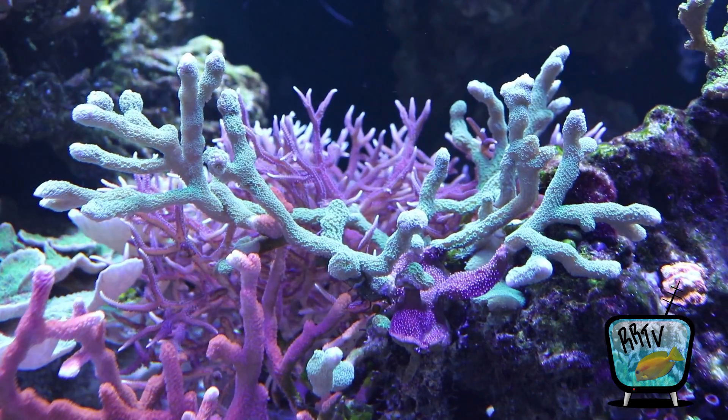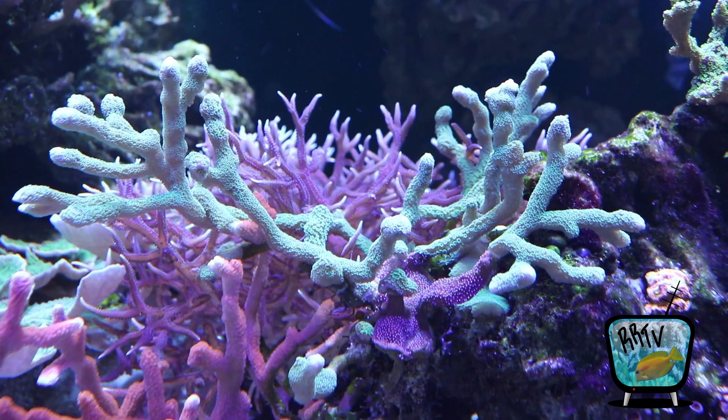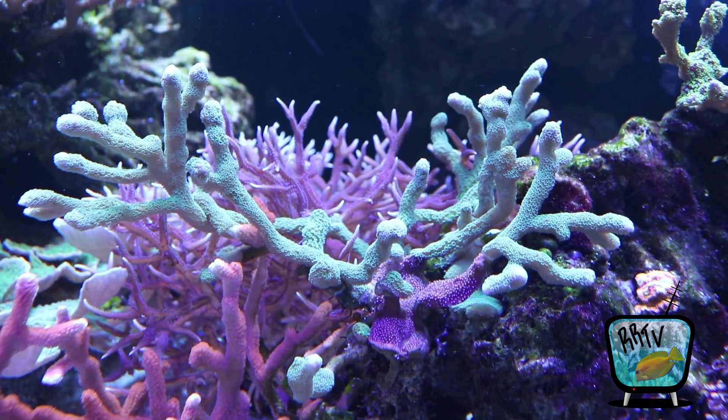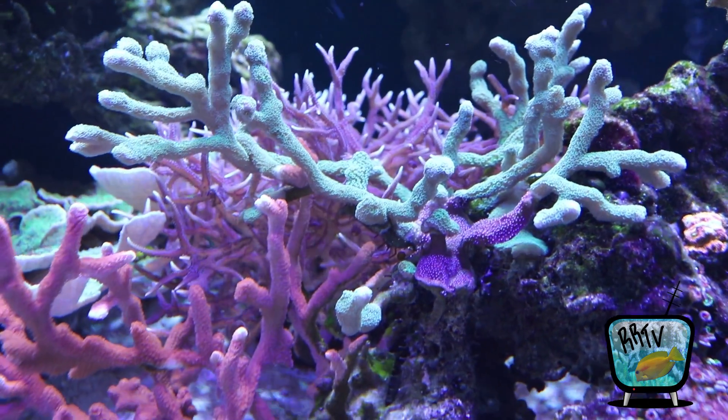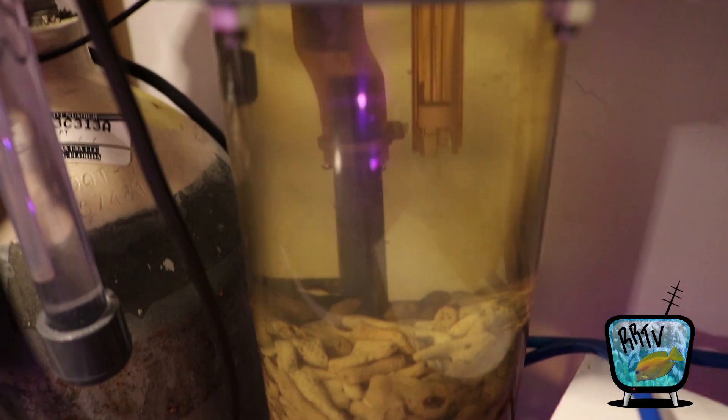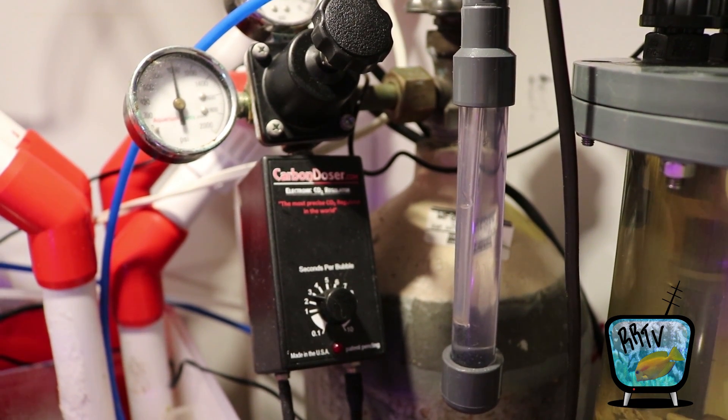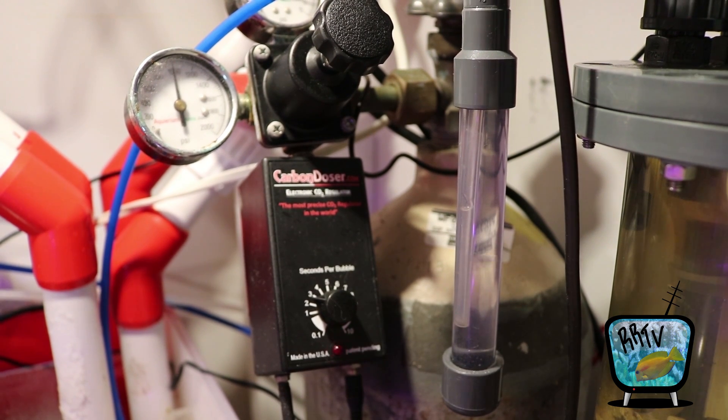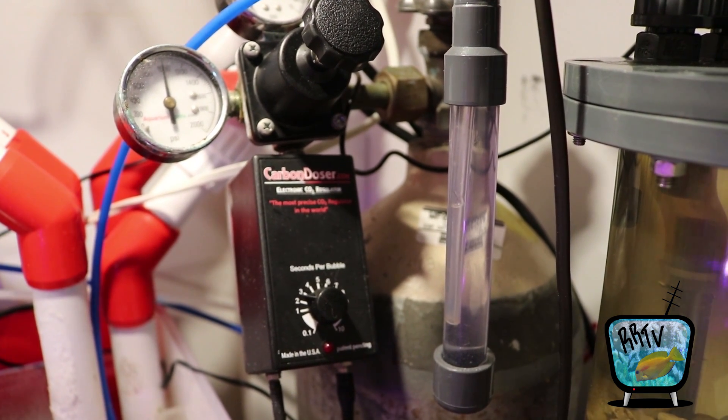They took in calcium, alkalinity, a slight bit of magnesium, and trace elements like strontium and iodine to make up their coral skeleton. What we're doing is taking those dead coral skeletons, putting them into a chamber of water fed from our tank, and putting carbon dioxide into that chamber to lower the pH to a point where it dissolves the structure of that dead coral skeleton.